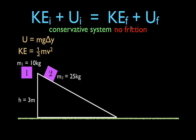Now, both objects are standing still — they're not moving, they have no velocity, and therefore no initial kinetic energy. We can set that term to zero. Both objects have a height of three meters and masses of 10 and 25 kilograms, so they both have some initial potential energy. We'll keep that term in our equation.